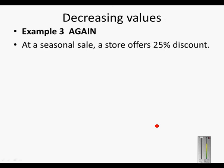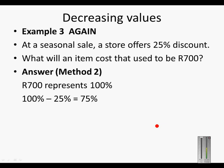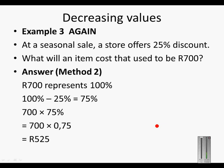A different method for this example: a 25% discount on a R700 item. 700 represents 100%. Because we are decreasing the price, we take 100% and subtract 25% to get 75%. So 700 times 75% is the same as 700 times 0.75, which gives us R525. So if we give a 25% discount on a R700 item, we will pay R525 for it.